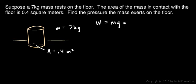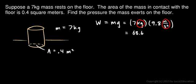So we just put in these numbers. The mass is 7 kilograms, and the acceleration due to gravity is 9.8 meters per second squared. 7 times 9.8 comes out to 68.6, and that's 68.6 kilograms times meters per second squared, and that, you might remember, is a newton, 68.6 newtons. That's the force.